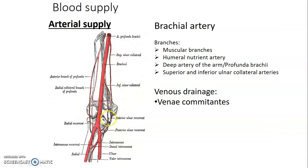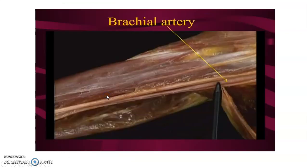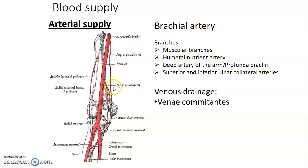Inferior ulnar collateral passes anterior to the medial epicondyle. The superior ulnar collateral passes posterior to the medial epicondyle. The posterior ulnar recurrent passes posterior to the medial epicondyle to anastomose with the superior ulnar collateral. The anterior ulnar recurrent passes anteriorly to the medial epicondyle to anastomose with the inferior ulnar collateral. Those are the vessels from the medial aspect.